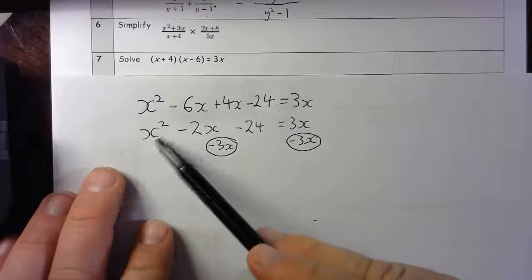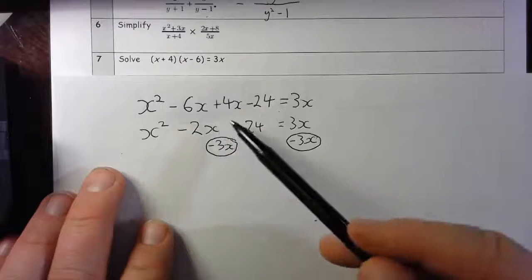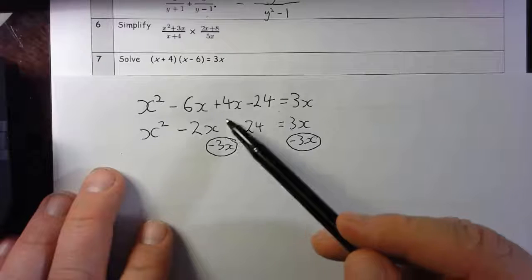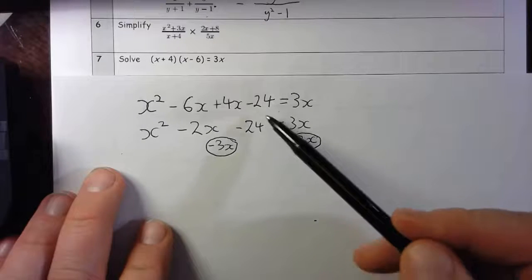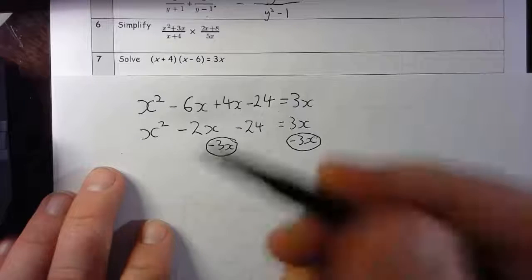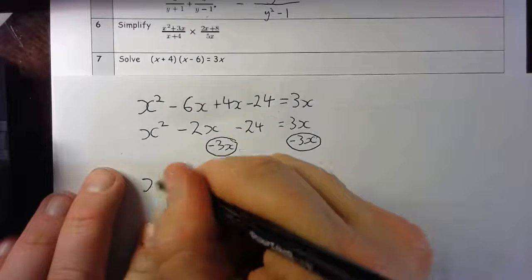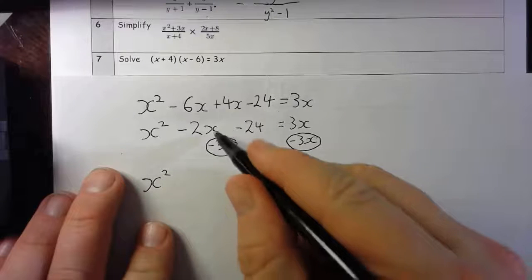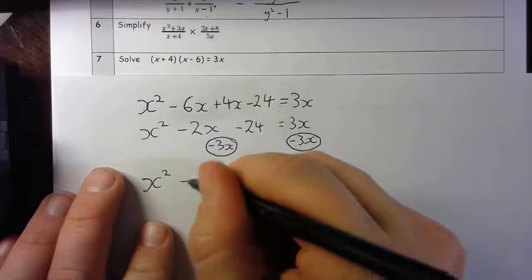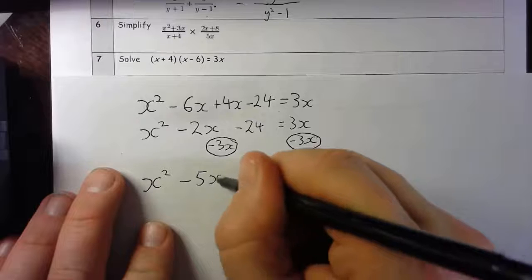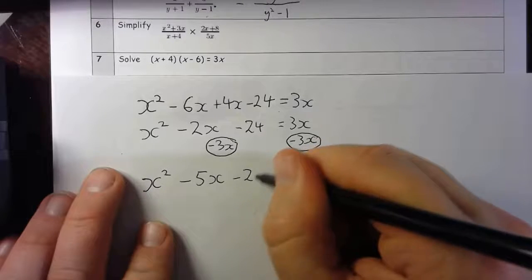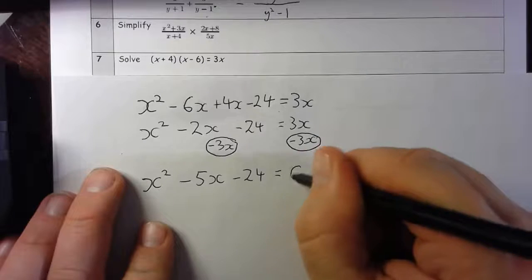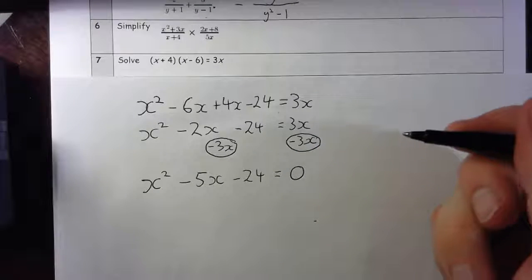So I'm going to get all of my square term of x and my to the power of 1 and my just constant term without a net power of x, and I'll put that equal to zero. So that gives me x squared minus 2x take away 3x is minus 5x. Be careful with that, still take away 24 equals zero.